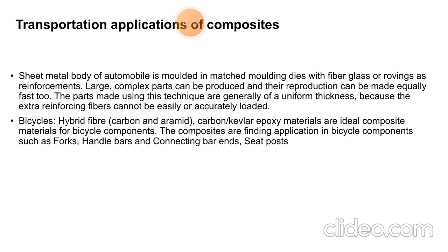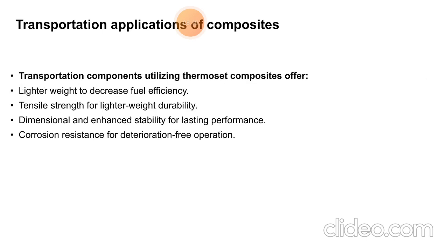Bicycle hybrid fibre — meaning carbon and aramid — carbon, Kevlar, or epoxy materials are ideal for bicycle components. Composites are finding applications in bicycle components such as the frame, handlebar and connecting bar, and seat post. Transportation components utilizing thermoset composites offer lightweight properties to increase fuel efficiency, tensile strength for lightweight durability, dimensional and enhancement stability for lasting performance, and corrosion resistance for deterioration-free operation.